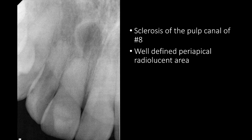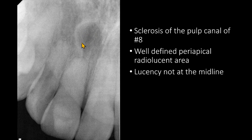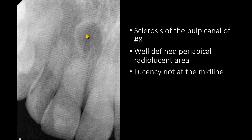We can also see a well-defined radiolucency in the apical region of the central incisor, and we can confirm that this radiolucency is not at the midline. We see the apex of the right central incisor is blunt and maybe a little shorter than the left central incisor. However, the most important finding here is that the PDL space of the right central incisor is intact, uniformly wide, and may not be in contact with the radiolucency.